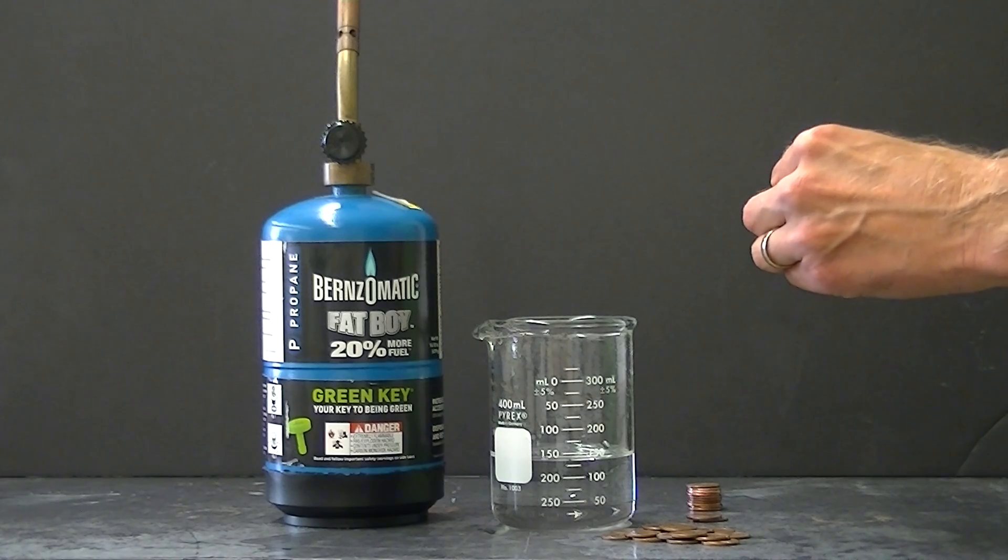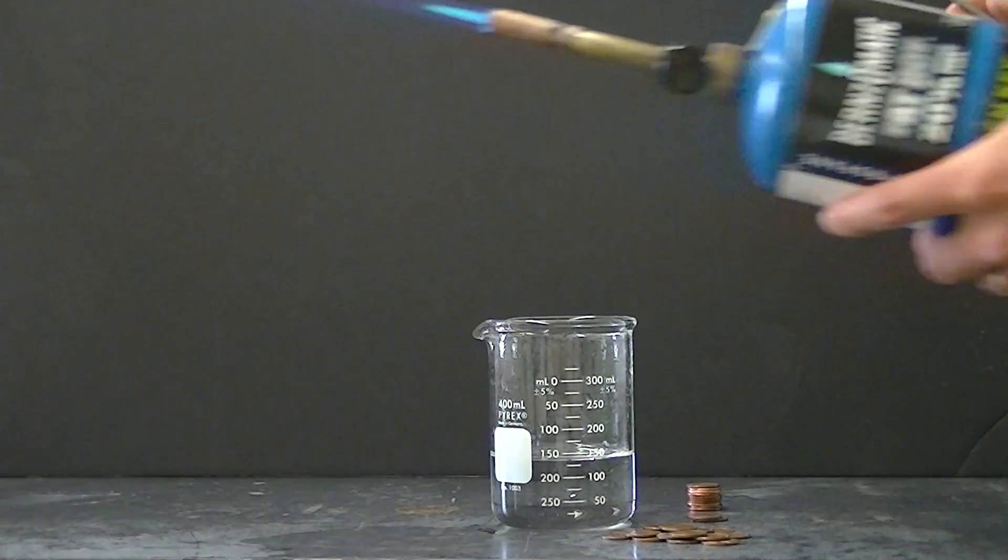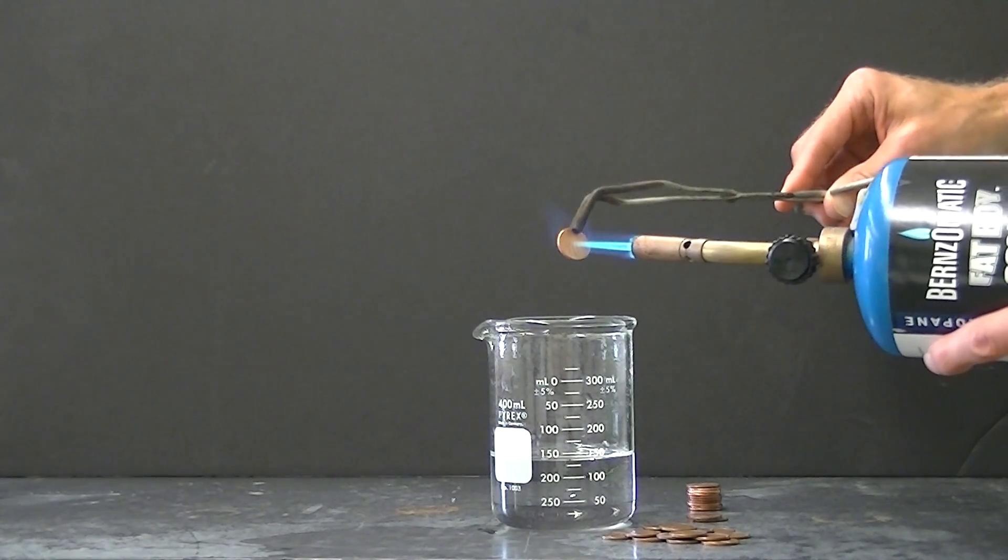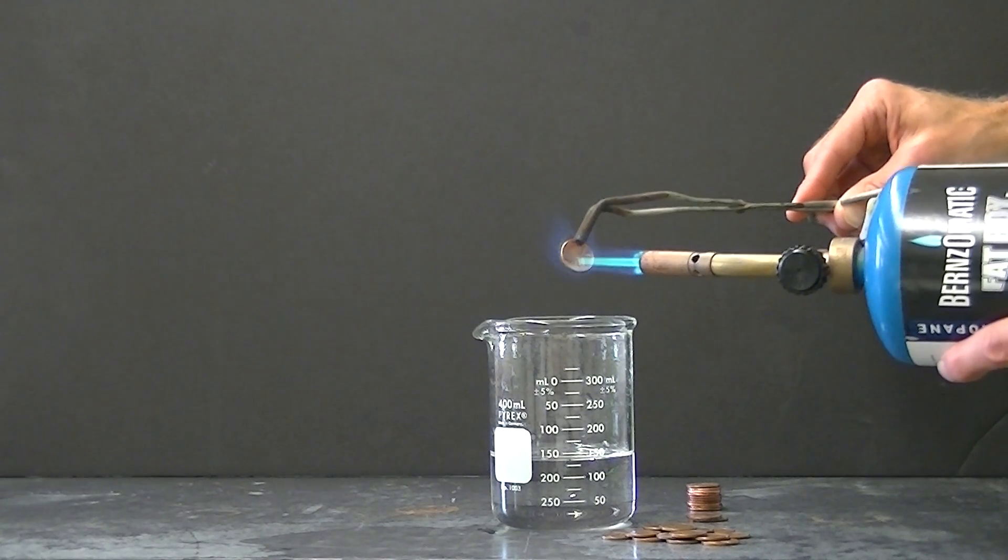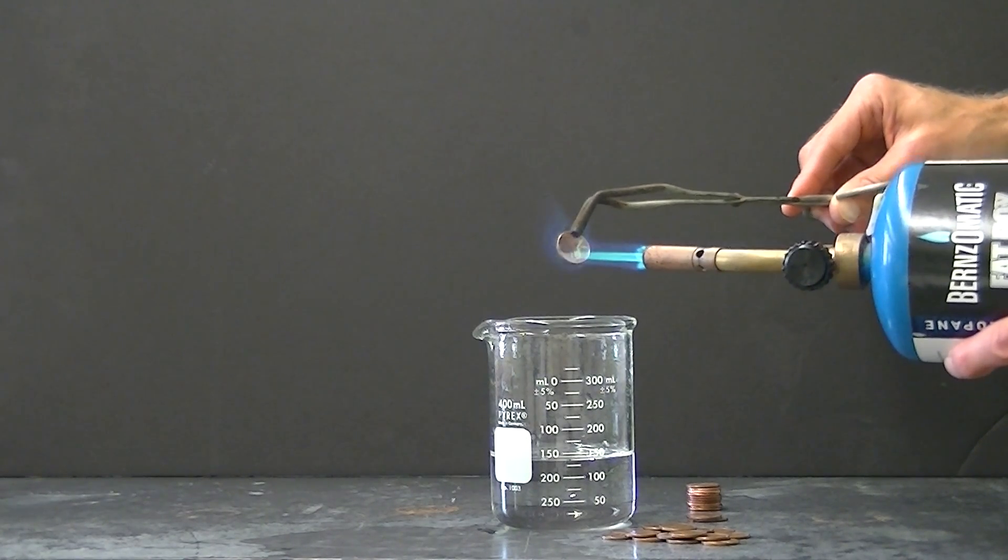I'm going to take a new penny minted again after 1982. This new penny is comprised of a zinc core, pure zinc core, and coated with copper.